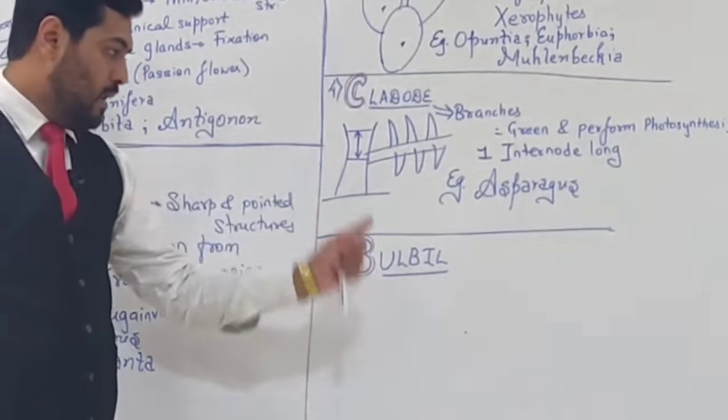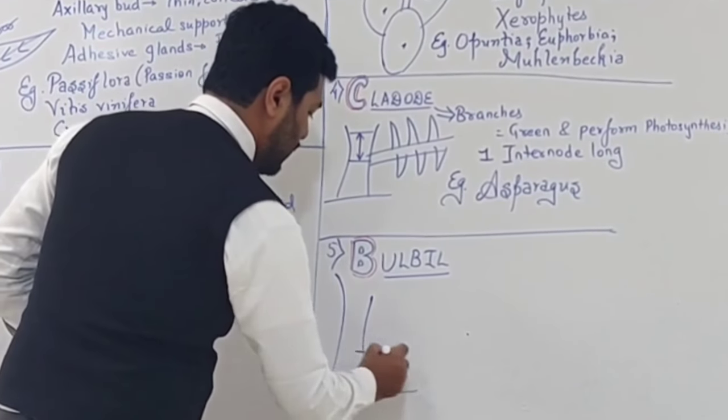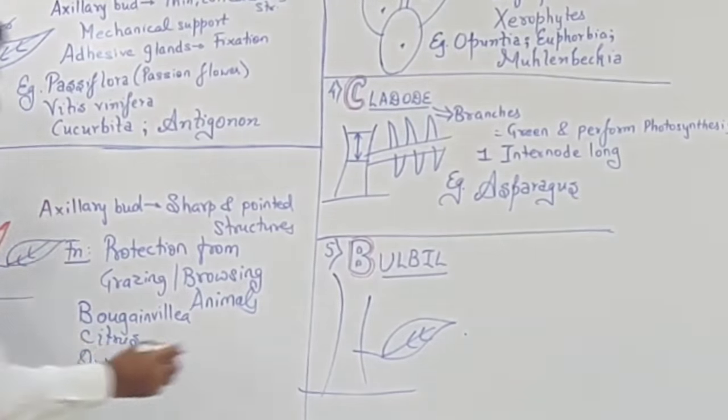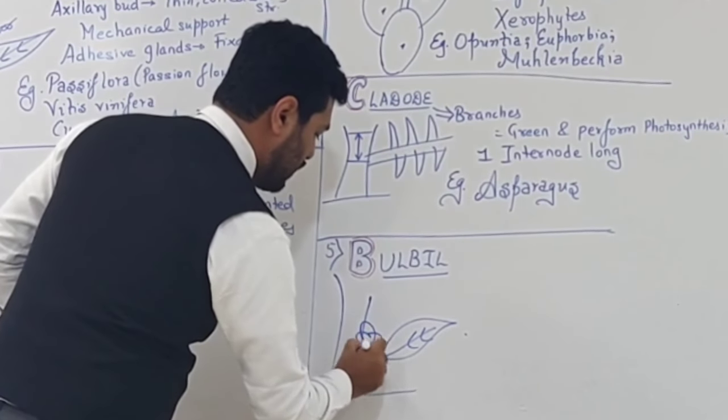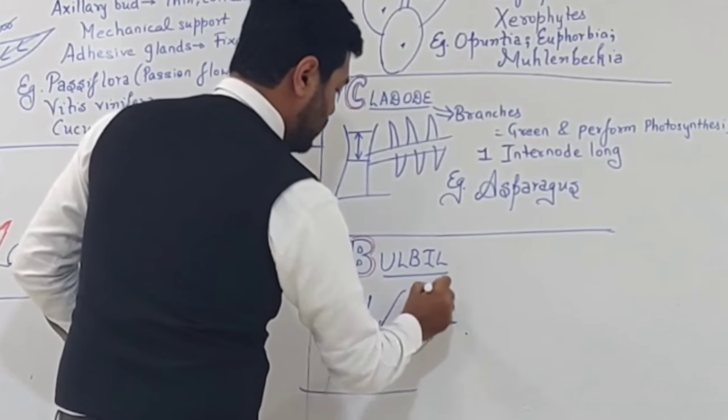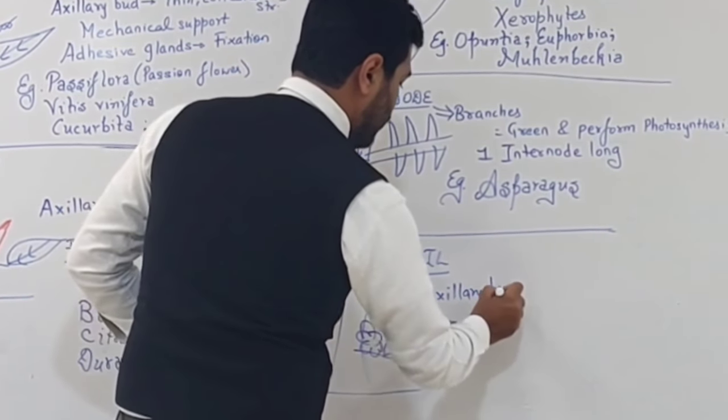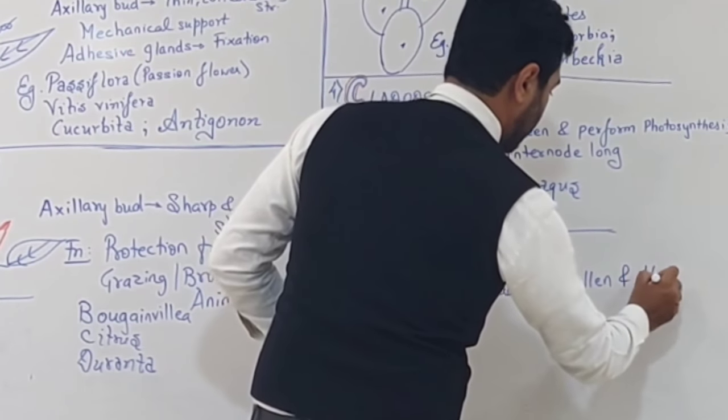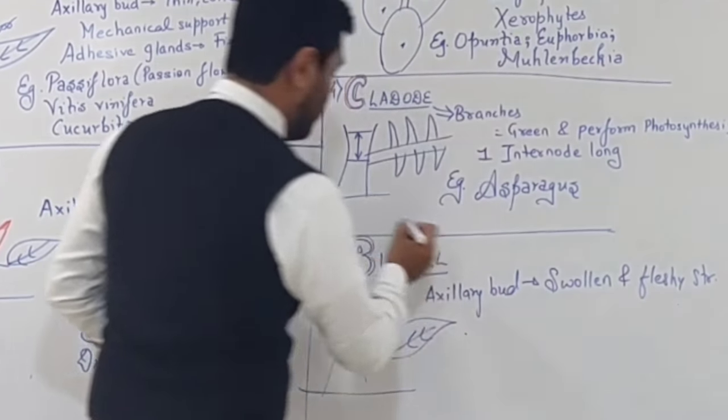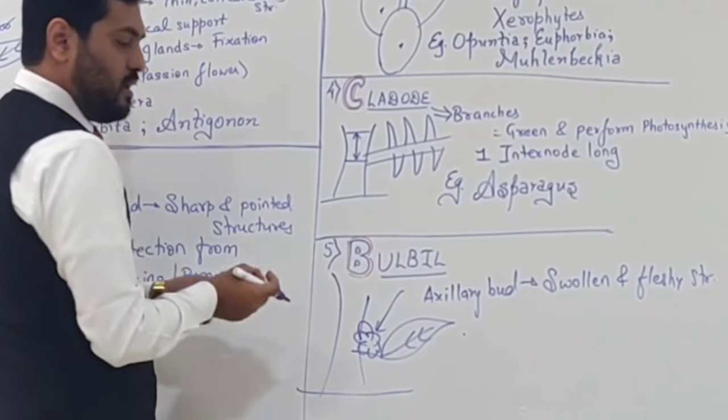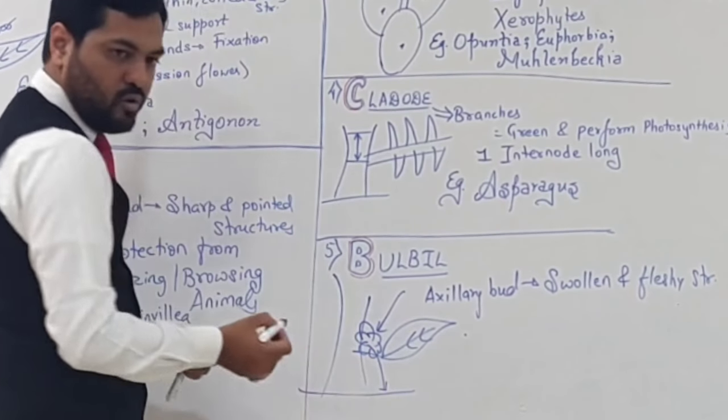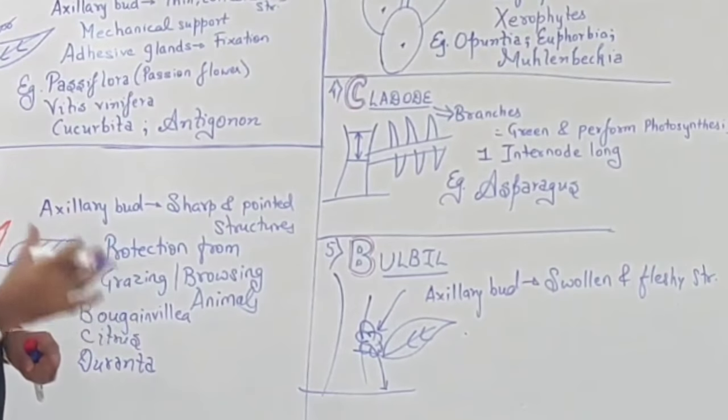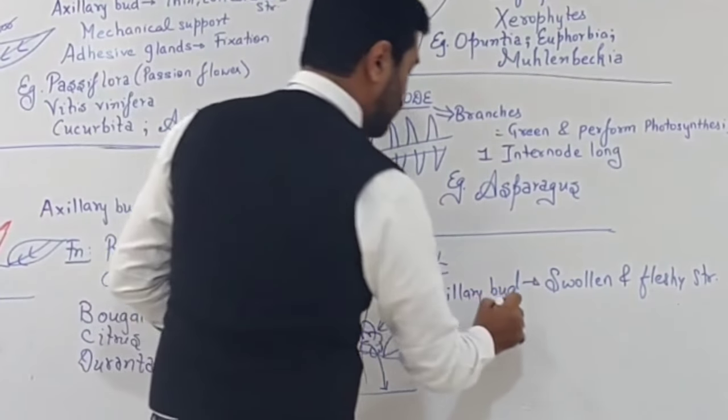Next is bulbil. We studied bulb like onion and garlic. In bulbil, the axillary bud - found at the angle here - becomes swollen and fleshy. Bulbil is basically the axillary bud modified into a swollen and fleshy structure. This bulbil falls onto the ground, germinates in soil, and develops into a new daughter plant, helping with vegetative propagation. Example of such modification is Dioscorea.